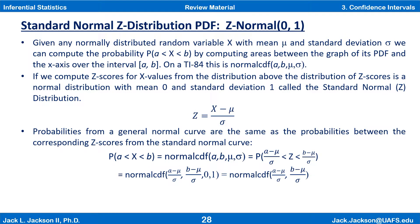Given any normally distributed random variable x with mean mu and standard deviation sigma, we can compute the probability that a is less than x is less than b by computing the area between the PDF and the x-axis over the interval from a to b. On a TI-84, this is normalCDF(a, b, mu, sigma), where a is the lower number, b is the higher number, mu is the mean, and sigma is the standard deviation. Similarly, on a TI-Nspire, it's normCDF with the same inputs.